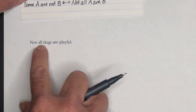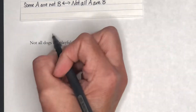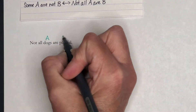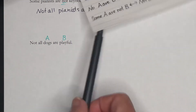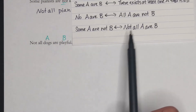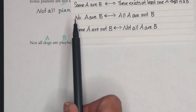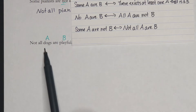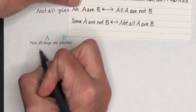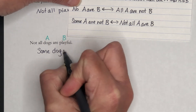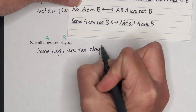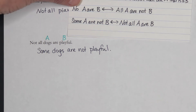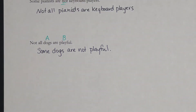The last equivalent: Not all dogs are playful. Let dogs be A and playful be B. As I mentioned, you're not always going to start on the left. We have 'Not all A are B,' so we go to the pattern: Some A are not B. Therefore: some dogs are not playful.